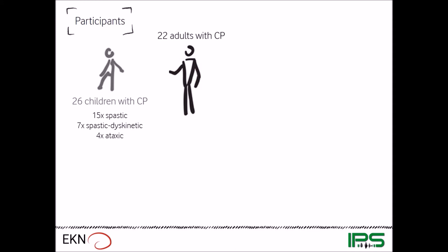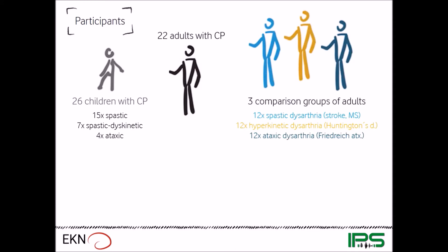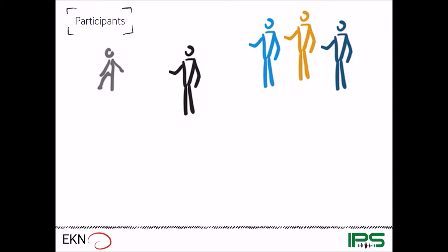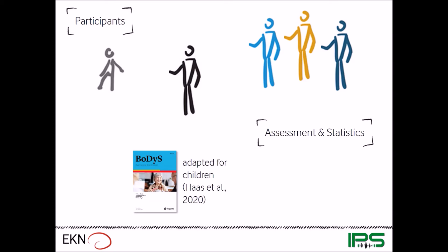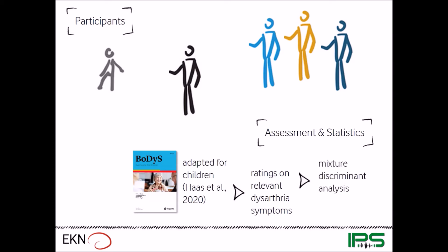There was one comparison group of adults with CP and we had three comparison groups of adults with different etiologies who all had dysarthria syndromes that we also expect in CP. So we had a spastic group, a hyperkinetic group, and also a group of adults with ataxic dysarthria. All participants were assessed with a German dysarthria tool, the Bogenhausen dysarthria scales, which has also been adapted for children. We obtained ratings on all relevant dysarthria symptoms, which we entered into a mixture discriminant analysis. Put simply, we determined the characteristic symptom patterns of the comparison groups and then mapped those onto the groups of adults and children with CP.